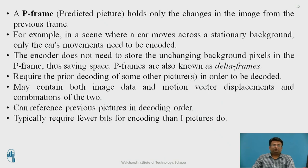The next frame type is the P-frame, also called a predicted picture. It holds only the information about changes in the image from the previous frame. For example, if a car moves across a stationary background, we capture only the movement of the car — only the car's movement is encoded in the P-frame. The encoder doesn't need to store the unchanging background pixels, which saves data. P-frames are also called delta frames, require prior decoding of some other picture, and may contain image data, motion vector displacement, or a combination of both. They typically require fewer bits to encode than I-frames.